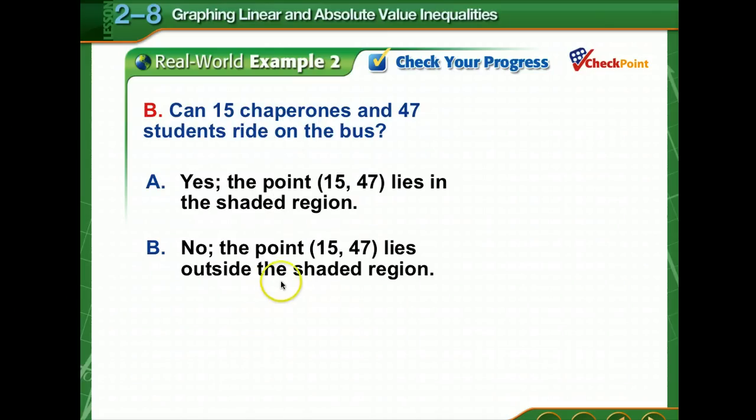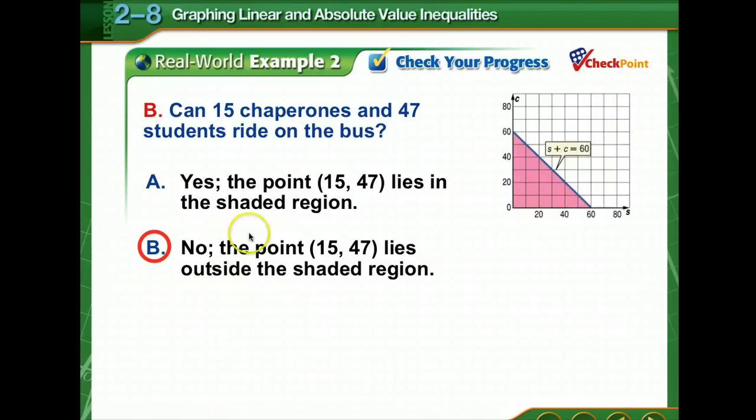So now using that, can 15 chaperones and 47 students ride on the bus? No, the point (15, 47) lies outside the shaded region, plus we can also do a quick check. 15 plus 47 is higher than 60. It equals 62, so we would know very simply that that would not fit.